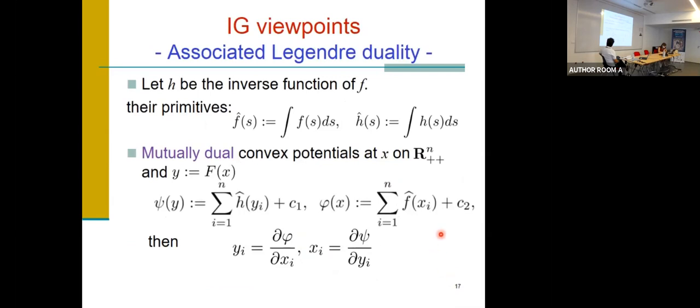Finally we will demonstrate geometric properties. So now we define F-tilde is a primitive function of F and H is an inverse function of F and H-tilde is its primitive function. Using F-tilde and H-tilde we define Psi(Y) and Phi(X). And it is easy to see F-tilde and H-tilde are convex, and we can find these two equalities follow. So these two functions are general conjugate functions.